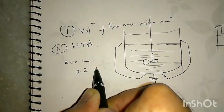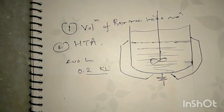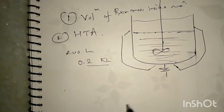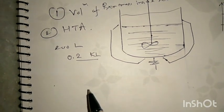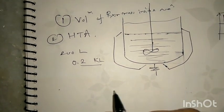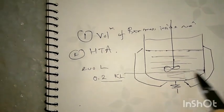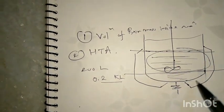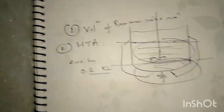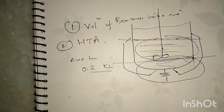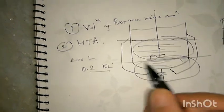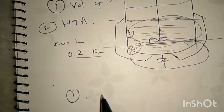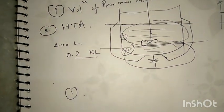For example, this is a reactor of 200 liters — that means a 0.2 KL reactor. To calculate the area or volume of the reactor, we need two things: first, the cylindrical part, and then the torispherical head.